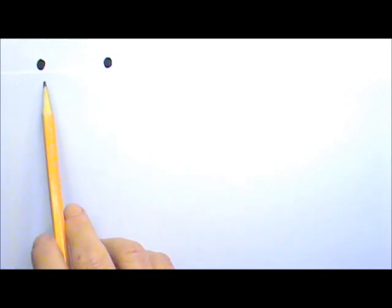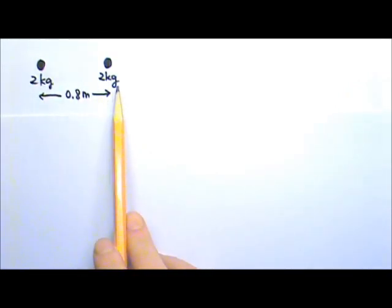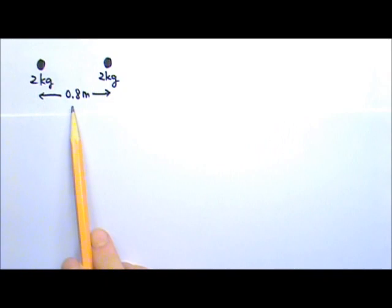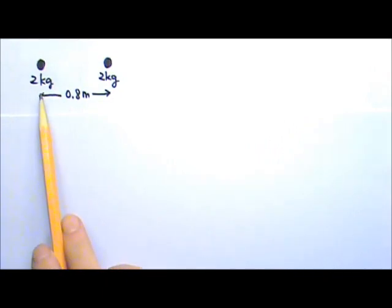Let's say you have two 2-kilogram objects, 0.8 meters apart. Where is the center of mass of these two-object systems?